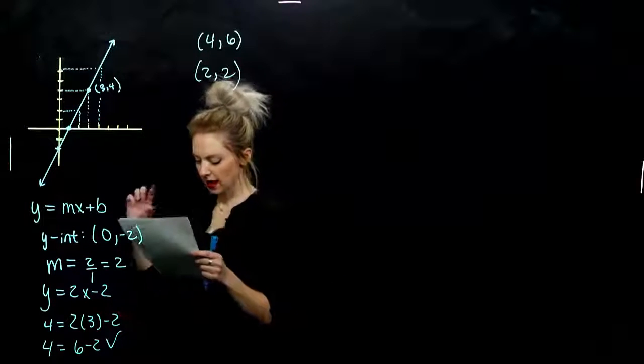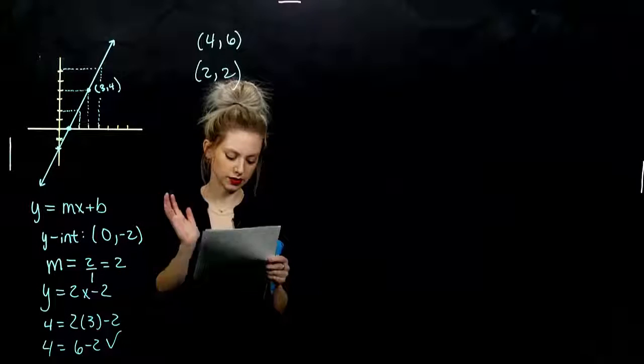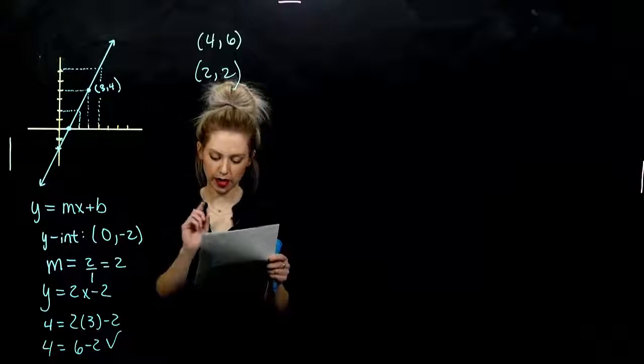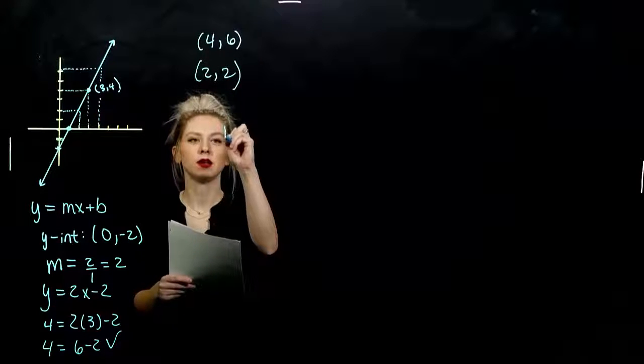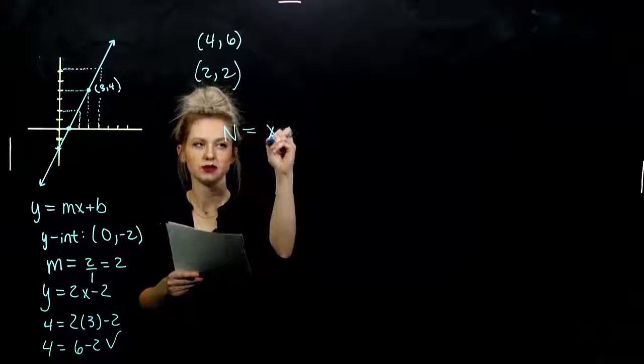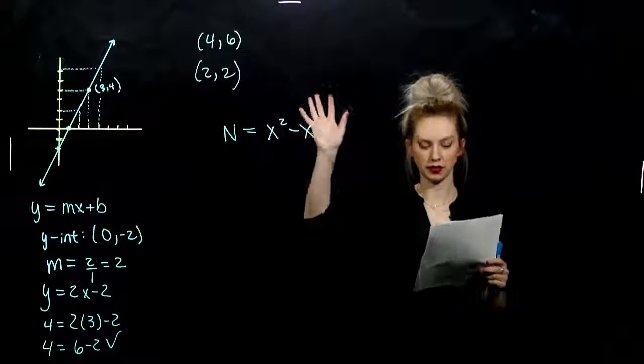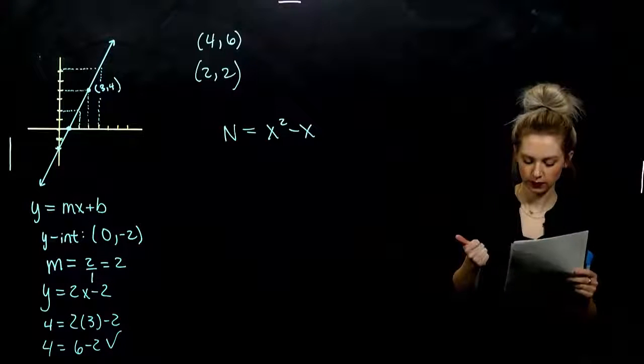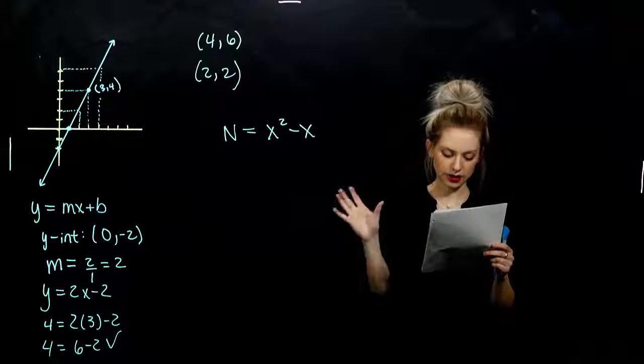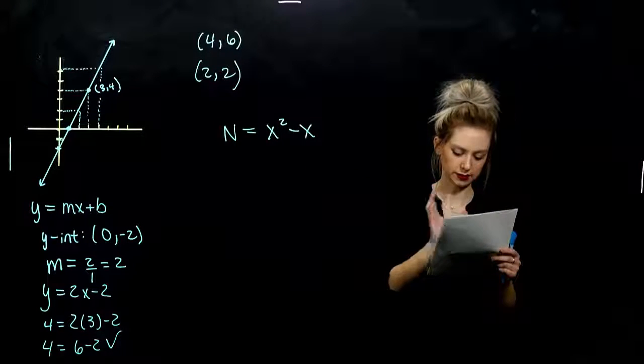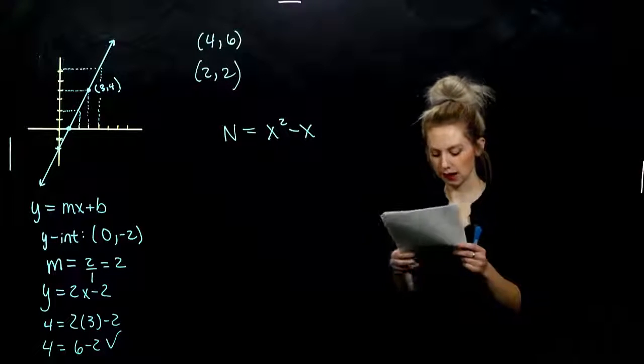So in a sports league of x teams, in which each team plays every other team twice, we don't care about that, the total number of games, n, to be played, is given by the polynomial equation. n is equal to x squared minus x, a polynomial, since all of the variables are up top. Passes that test. A women's slow pitch softball league has 10 teams, and each team plays every other team twice. So it follows this model. What is the total number of games played?